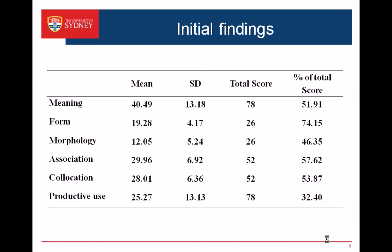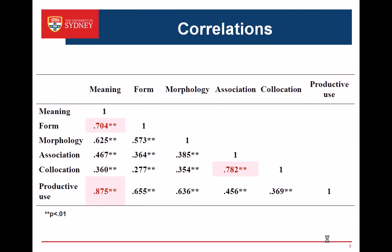Here are some initial findings based on time wave one. We can see the mean and standard deviation of all the tests. Students achieved best in form, where the mean score percentage of the total was 74%. The second was association, followed by collocation. The lowest percentage was productive vocabulary use at 32%, which is not surprising because productive use is the most demanding task and is considered the most advanced form of vocabulary knowledge.